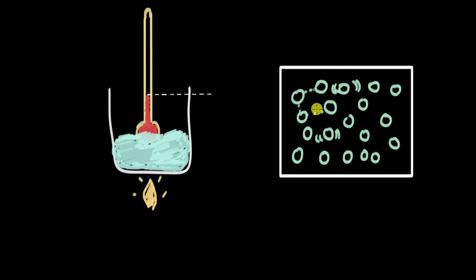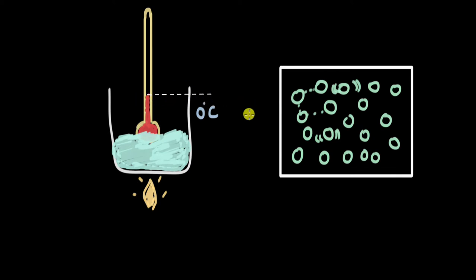As a result they move around more freely — that is when the solid starts changing into liquid. When ice starts changing into water, what is observed is that the temperature remains at zero degrees Celsius. Even if you're supplying heat, until all of the ice has changed to water the temperature doesn't increase. This temperature is called the melting point.